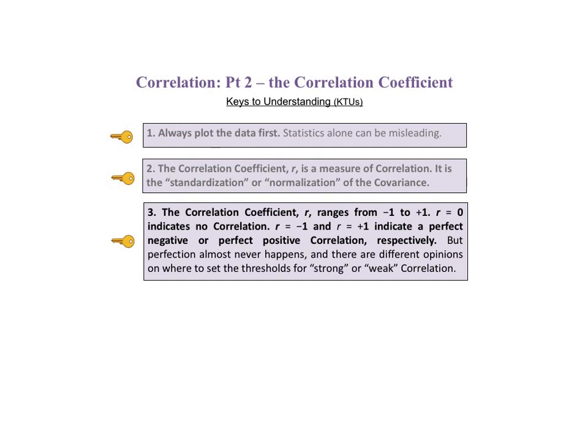The third key says the correlation coefficient r ranges from negative 1 to plus 1. r equals 0 indicates no correlation. r equals negative 1 or r equals plus 1 indicate a perfect negative or a perfect positive correlation, respectively.